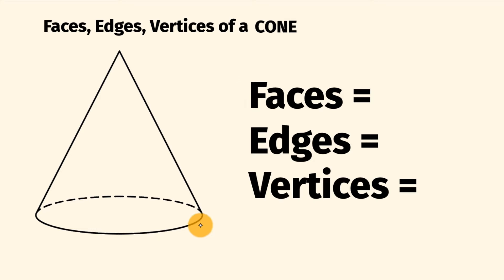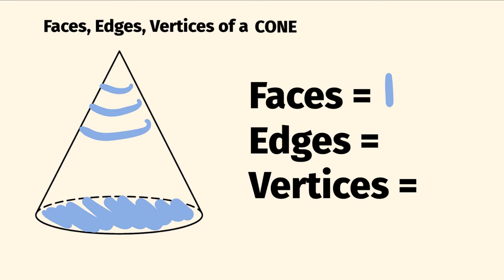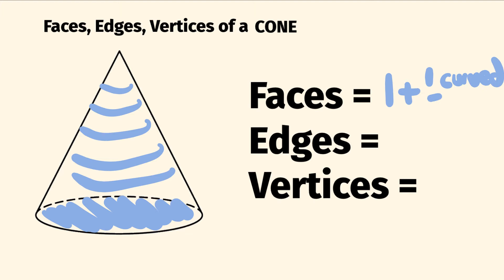This is the number of flat surfaces. So the number of faces of a cone — the number of flat surfaces — we have this one on the base here, which is a circular shape, and that is the only face. On top of it, this shape that goes around here is technically not a face. It's a curved surface. So we have one face and one curved surface.